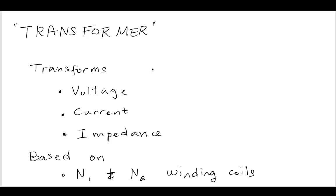So we call it a transformer because in the ideal case it transforms voltage, current, and impedance based exactly on N1 and N2, the number of winding coils in the primary and secondary side. I hope this helps and I'll see you in the next video.